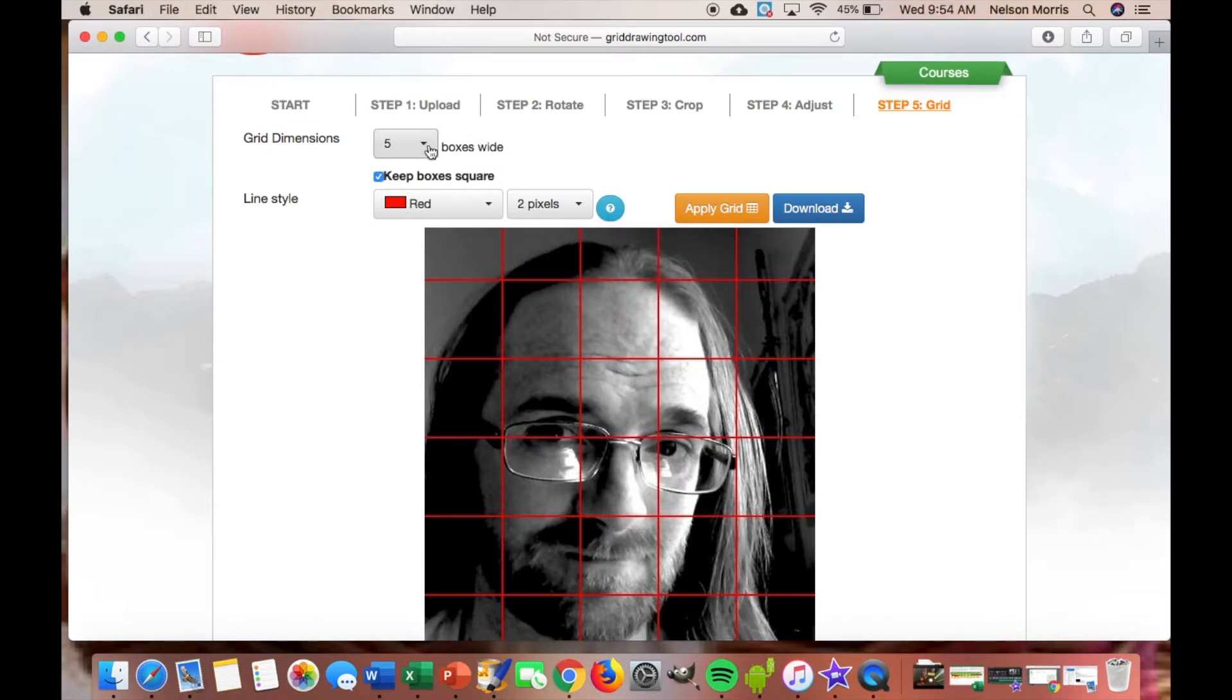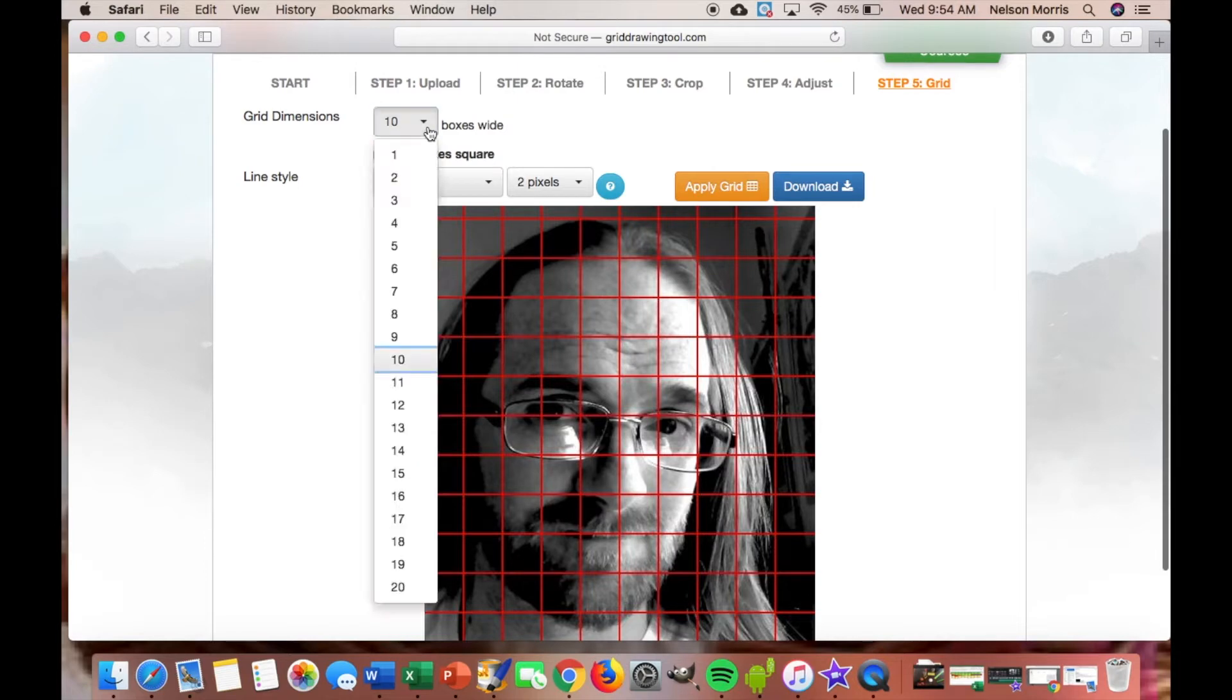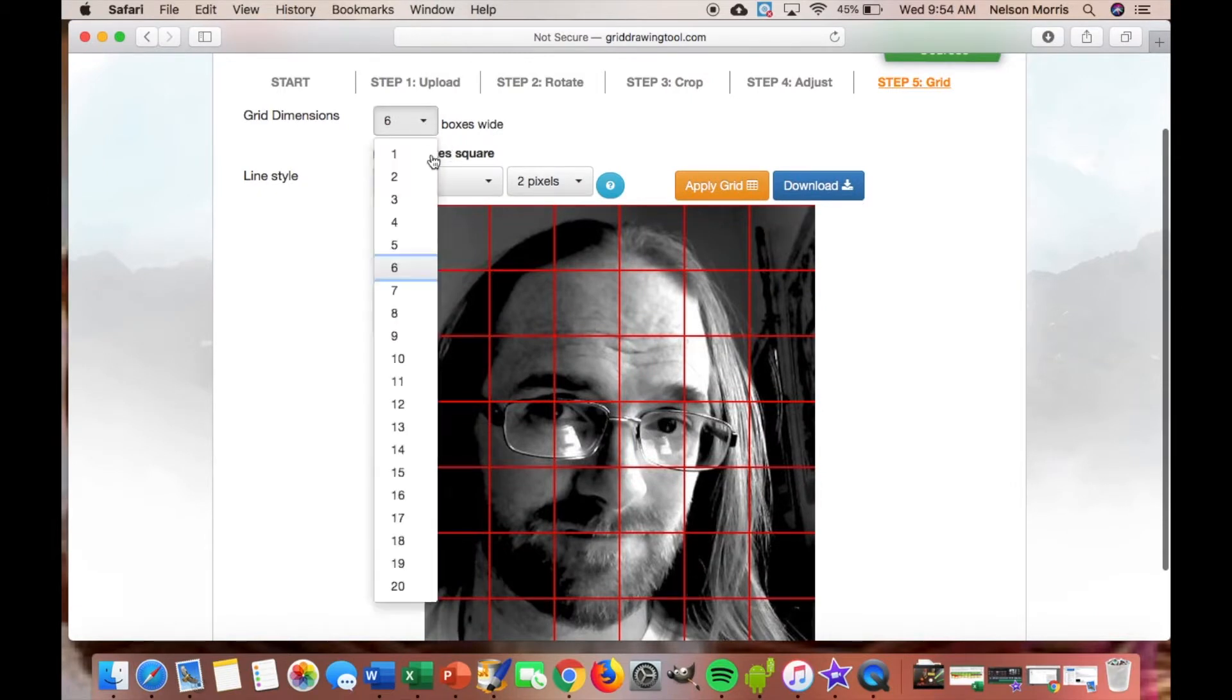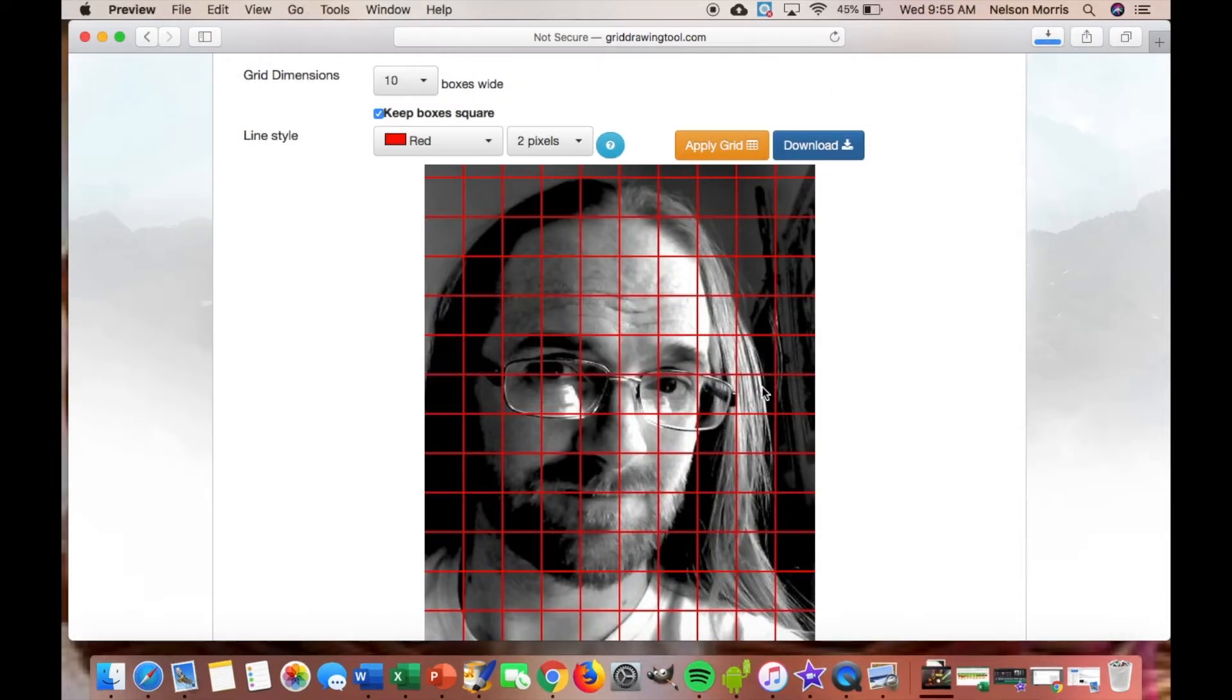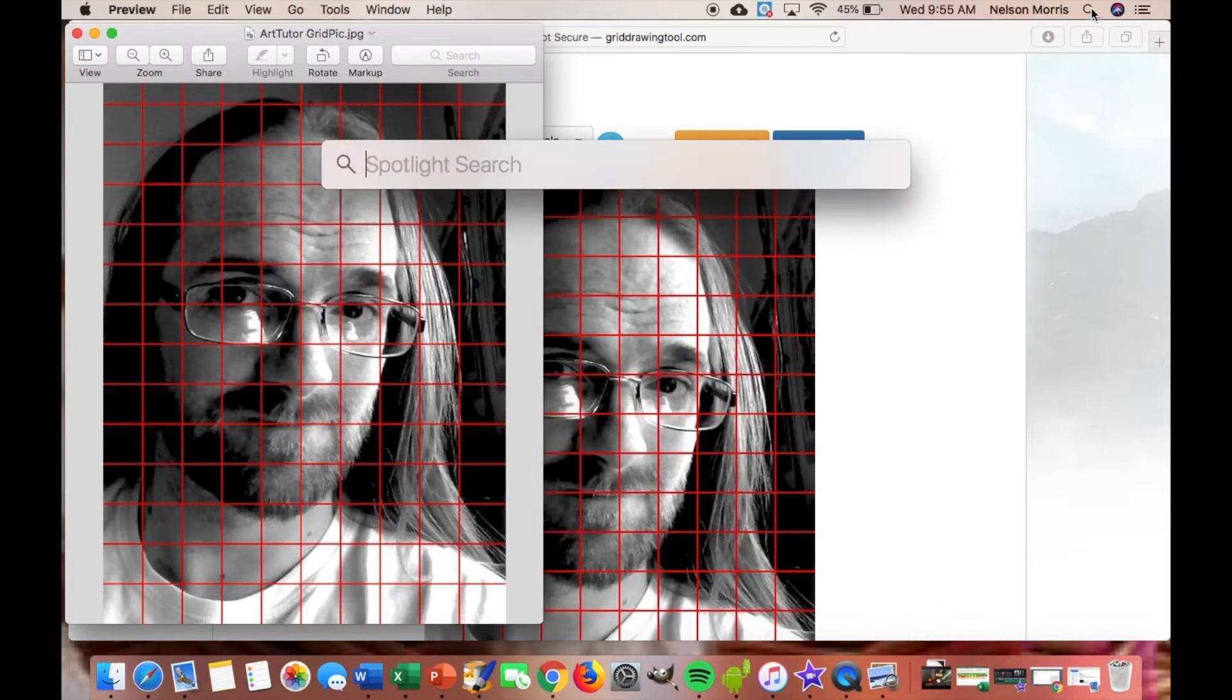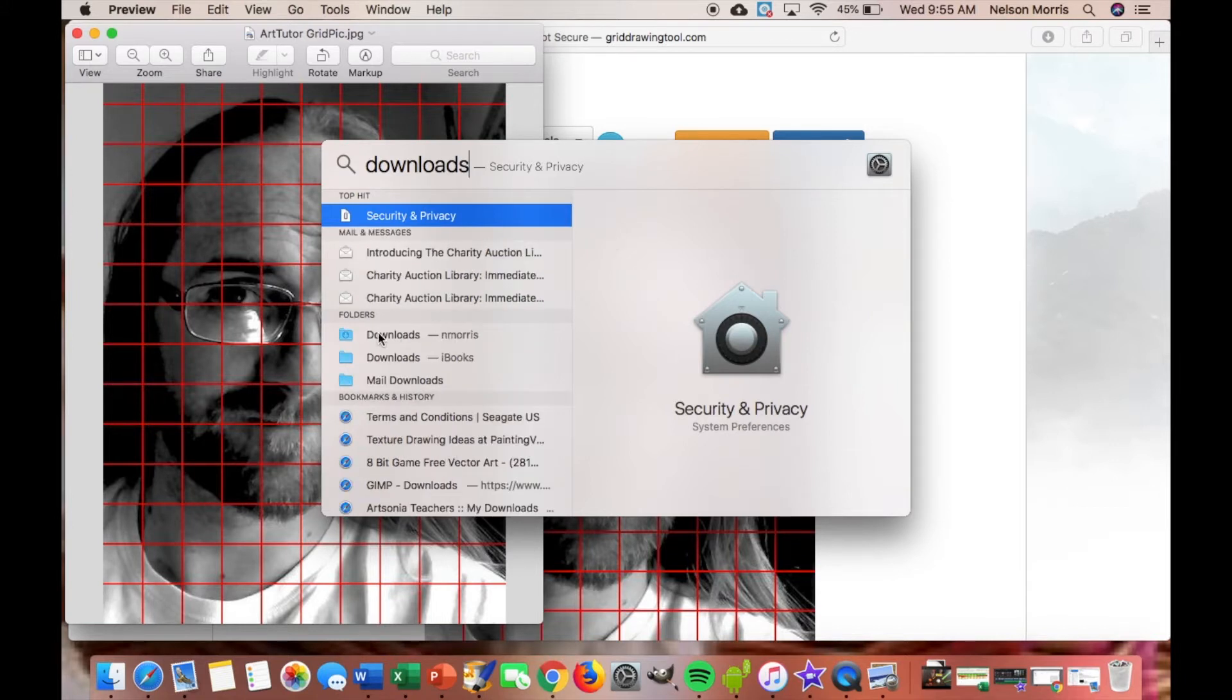Now I'm going to go to gridding and you see it automatically put a grid right on the face. However, I can adjust this in some different ways. I don't want you to go any smaller than a 10. My third graders, I want you to go with probably the six or the eight. The smaller my grid, the more detail and the more accuracy I can do with my grid drawing. Now I'm going to create it, hit the okay. It downloads to my download folder.